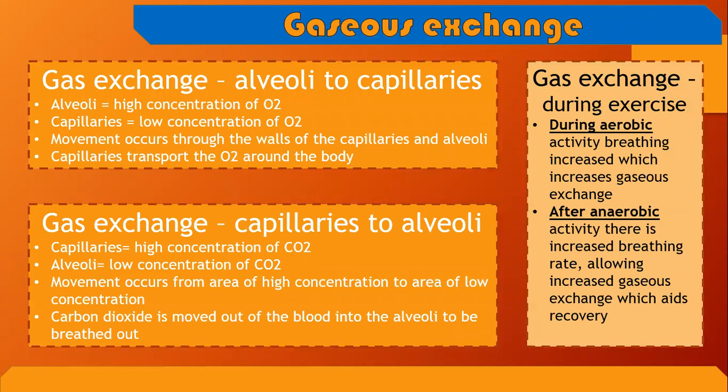As mentioned previously, gaseous exchange takes place in the alveoli. Gases move from areas of high concentration to areas of low concentration. In our lungs, there is a high level of carbon dioxide as our bodies have used the oxygen from the air and now need to expel that carbon dioxide. In the open air, there are low levels of CO2 because oxygen is plentiful. Therefore, when we breathe, we are filling up our lungs with oxygen and forcing the carbon dioxide out.